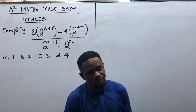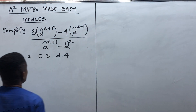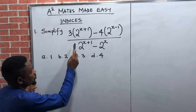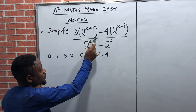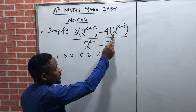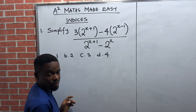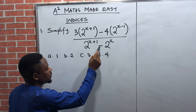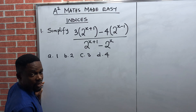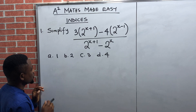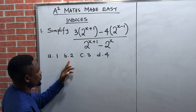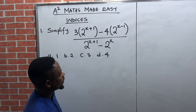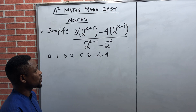Now look at this particular question. The question says: simplify three brackets two raised to power x plus one, close bracket, minus four bracket two raised to power x minus one, close bracket, then all over two raised to power x plus one, then minus two raised to the power x. The options are: option A is one, option B is two, option C is three, option D is four.